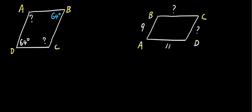By the rule in parallelogram, if it is a parallelogram, the consecutive angles are supplementary. Therefore, angle C, the measure of angle C is 180 minus 64.